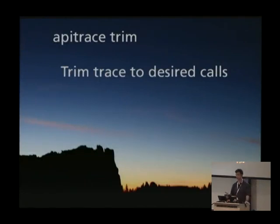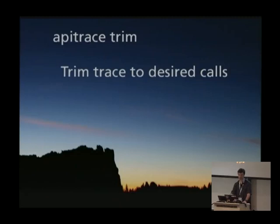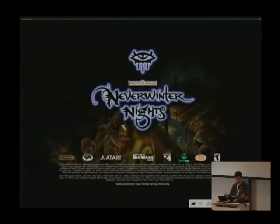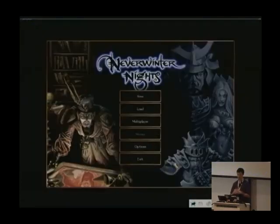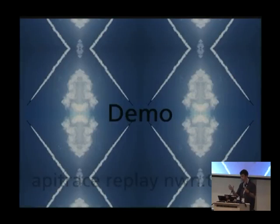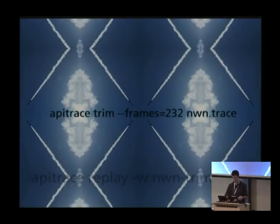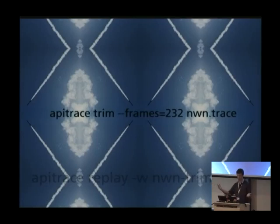When we replayed Tux Racer, the first thing you saw was the menus and navigating around, and then somewhere in there was the interesting thing the bug report was about — that's a bunch of wasted stuff. So I implemented an API Trace trim feature. You can say apitrace trim --frames=232 — it's plural because you could do 232-235, comma 238, whatever complicated set of frames you're interested in — and it will trim the trace down to just those frames.